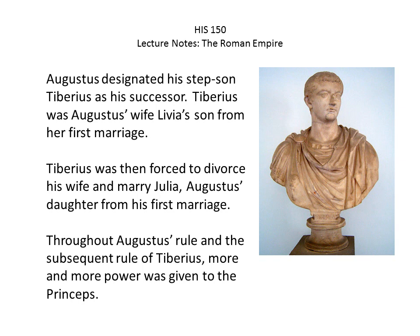Augustus designated his stepson Tiberius as his successor. Tiberius was his wife Livia's son from her first marriage. Augustus had no other children that survived to adulthood besides his daughter Julia. Tiberius was forced to divorce his first wife, whom he loved, and marry Julia. So Tiberius and Julia were both stepchildren to their respective stepparents, and now they were married. Throughout Augustus's rule and subsequently, more and more power was given to the princeps.